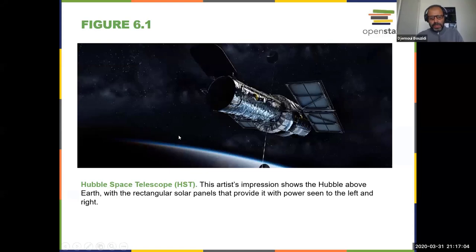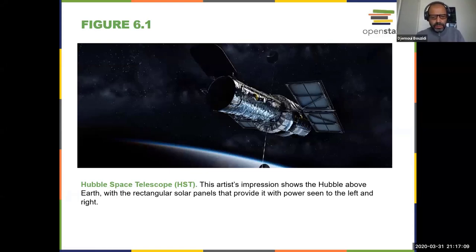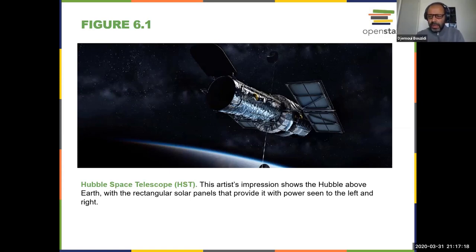The Hubble Space Telescope is one of the legacy devices that has been operating for a long time and is still useful. We are collecting a lot of information from it, including outstanding images of the sky in visible light. It was supposed to live for a certain amount of time but has lasted far longer than originally planned.